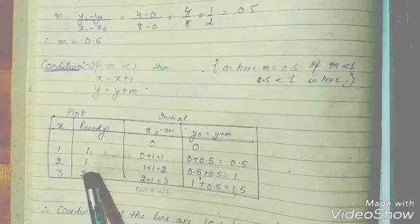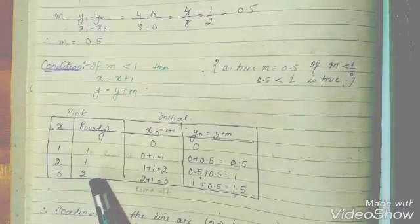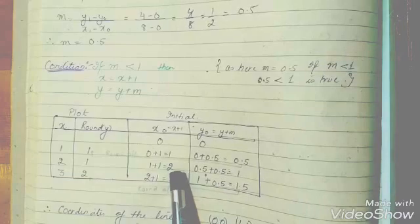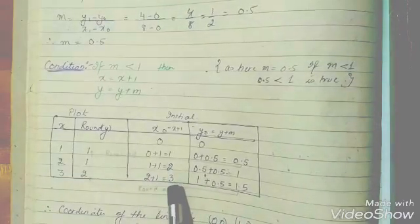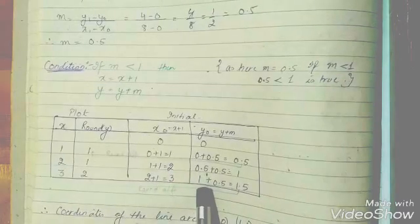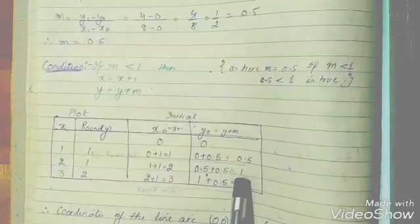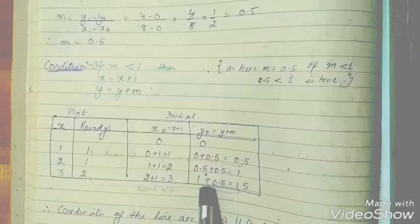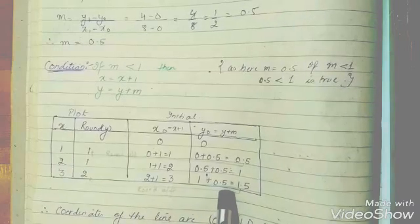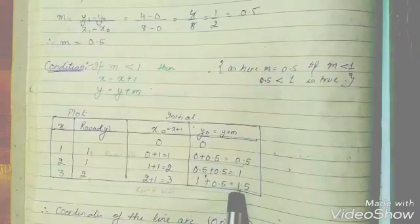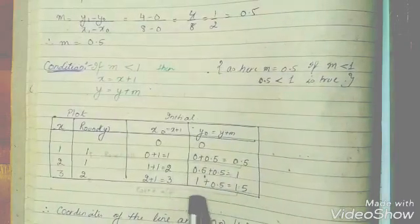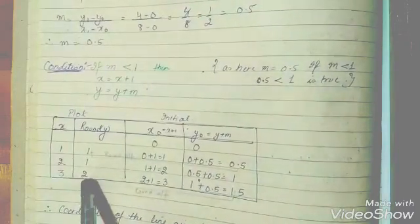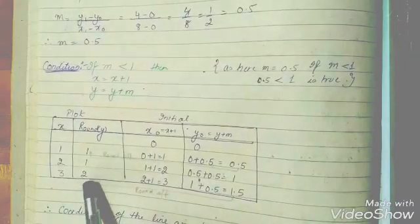In the next case, to calculate the next value, we take the initial value of X which was 2 and increment it by 1, we come up with 3. In the same way, the previous value of Y was 1, we increment it by 0.5 which is M. We come up with 1.5 which is then rounded off and converted into 2. So the new value of X and Y become 3 and 2.